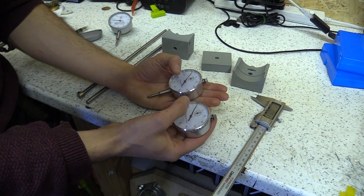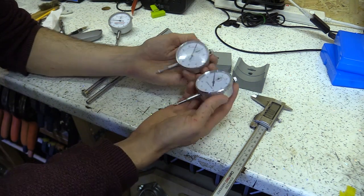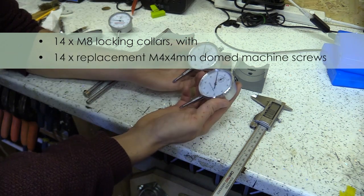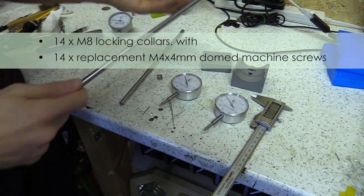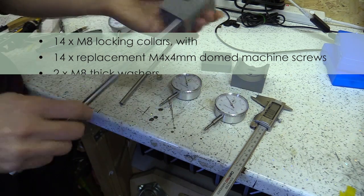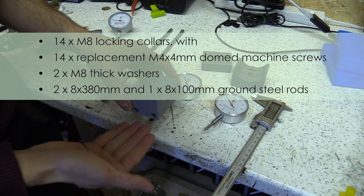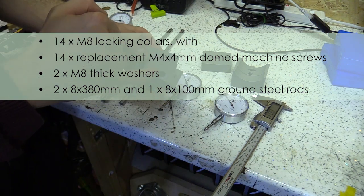I 3D printed these parts out of PLA. You will also require 14 M8 locking collars with 14 replacement M4 4mm dome machine screws, 2 M8 thick washers, and 2 8mm diameter by 380mm long ground steel rods.